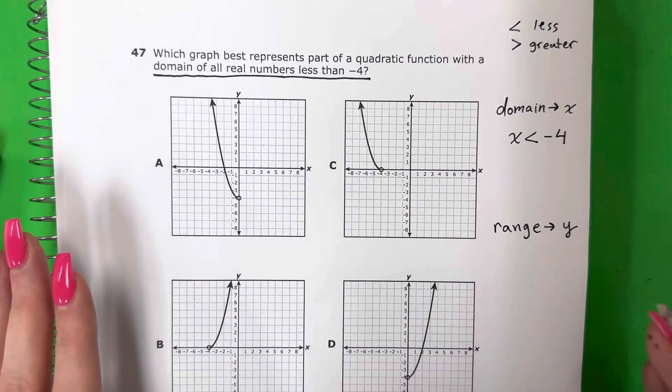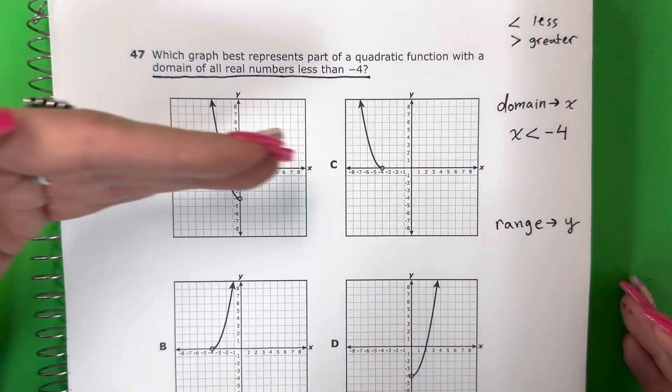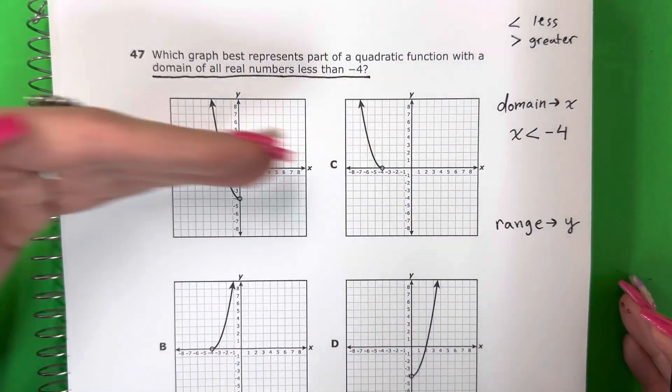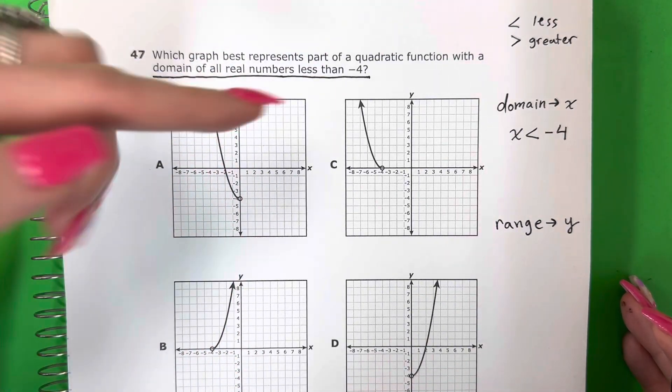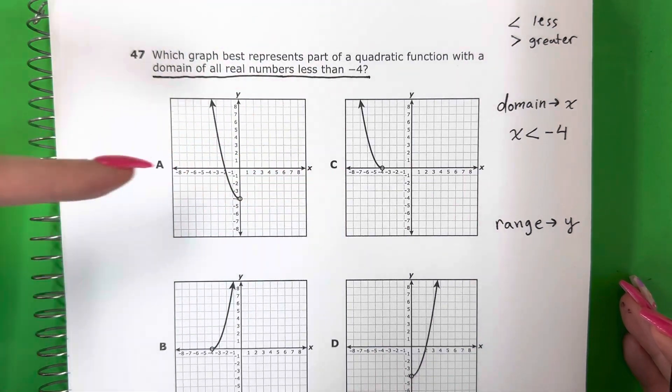So let's talk about what is x. X is left and right, izquierda, derecha. Or x is up and down? X is left and right. X is izquierda, derecha.